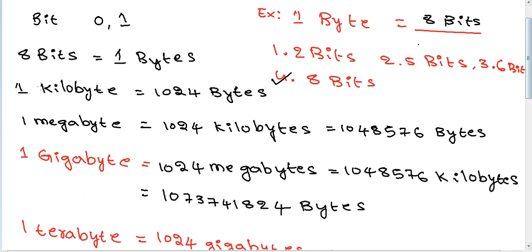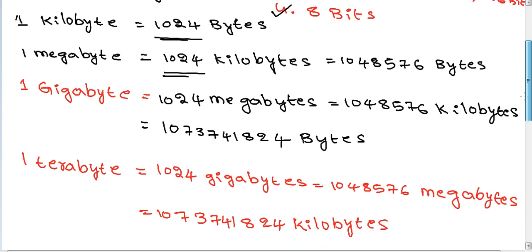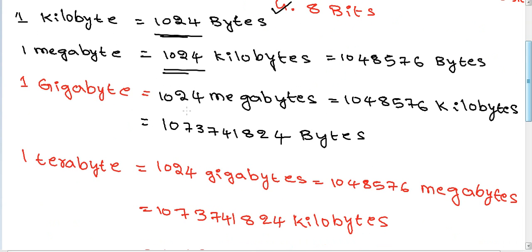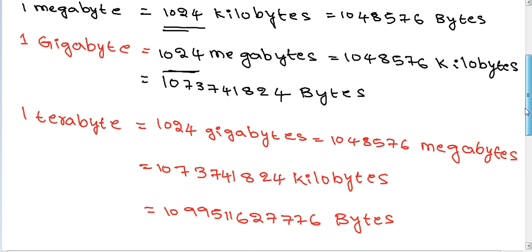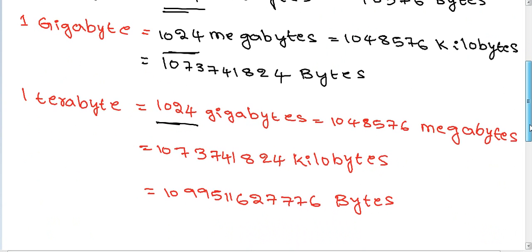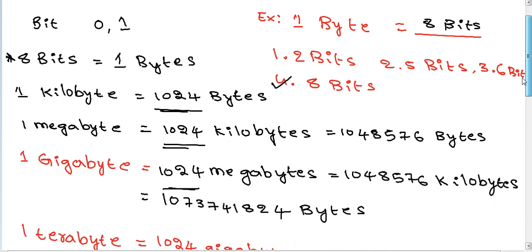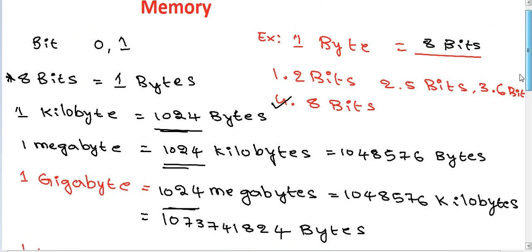Important: one kilobyte equals 1024 bytes, one megabyte equals 1024 kilobytes, one gigabyte equals 1024 megabytes, one terabyte equals 1024 gigabytes. These are important and expected questions in all competitive exams.